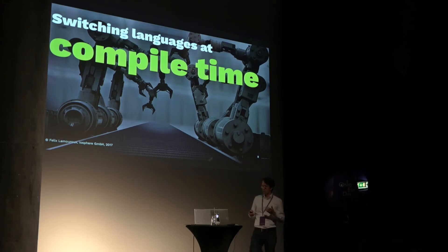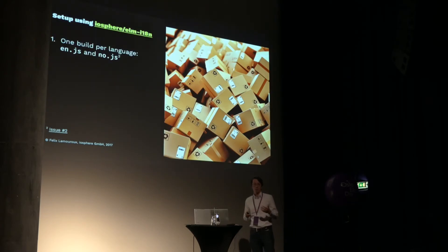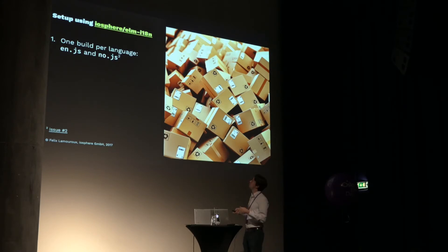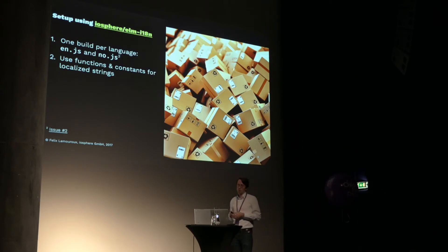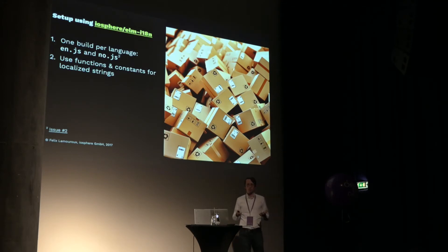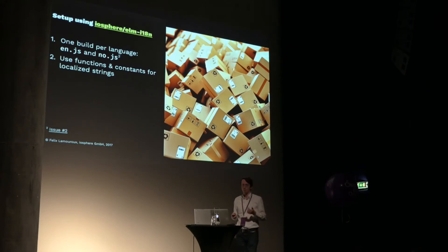We think it's much nicer to do this at compile time. The approach is that you have one build per language — instead of one all.js, you have one english.js, one norwegian.js, one german.js. You simply use constants for localized strings and functions if you have patterns like 'hello Felix' or 'hello Oslo Elm.' They can be really simple because you only have to think about one language at a time.